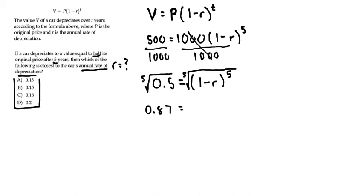This equals 1 minus R, because the fifth root cancels out the power of 5. To finish solving for R, we add R to both sides and get R plus 0.87 equals 1.